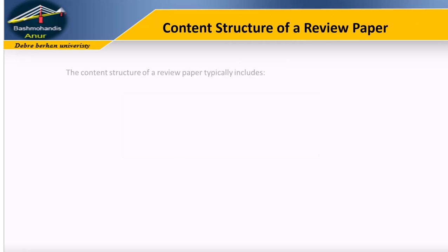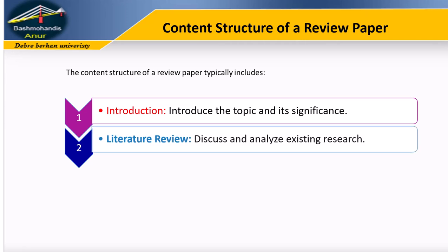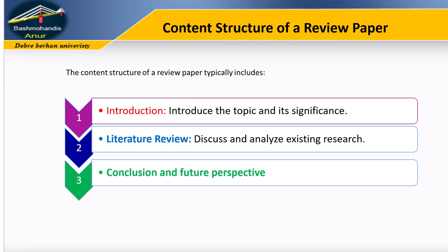Content structure of a review paper: the structure typically includes an Introduction, where you introduce the topic and its significance; a Literature Review, where you discuss and analyze existing research, often divided into subsections based on themes or methodologies, and which may have different chapters depending on the nature of the study; and a Conclusion, where you summarize key findings, highlight gaps, and suggest future research directions.